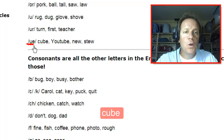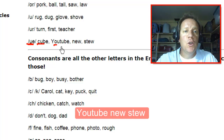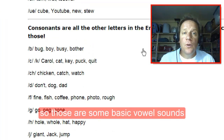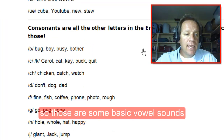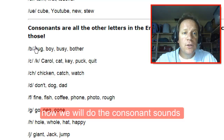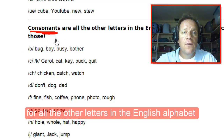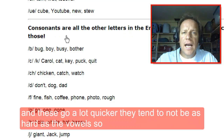Long U like cube, YouTube, new, stew. So those are some basic vowel sounds. Now we will do the consonant sounds for all the other letters in the English alphabet. These go a lot quicker — they tend to not be as hard as the vowels.